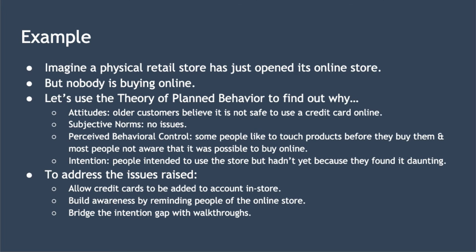Let's take a look at an example to bring all this to life. Imagine a physical retail store has just launched its online store. They want people to move from buying in-store to online, but nobody is buying online. To find out why, we create a survey of existing customers shaped using the theory of planned behaviour. Here's what we find out.